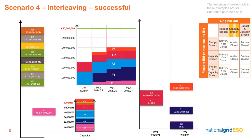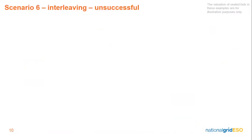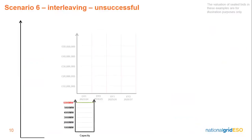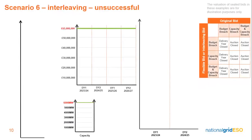We can see that bid K1 has breached the capacity cap. However, there are no further available sealed bids from Project K, so the auction will be closed from this point, according to the chart on the right. So we have seen interleaving work. Let's see what happens when an interleaving loop fails. Scenario 6: Interleaving Unsuccessful.